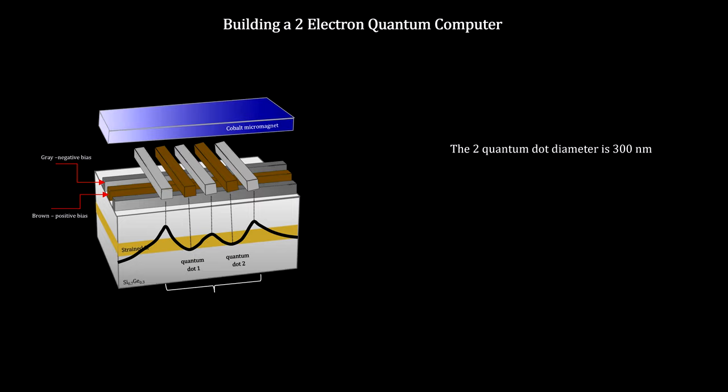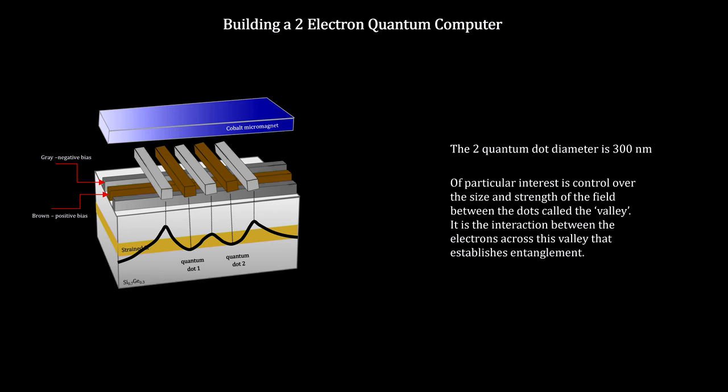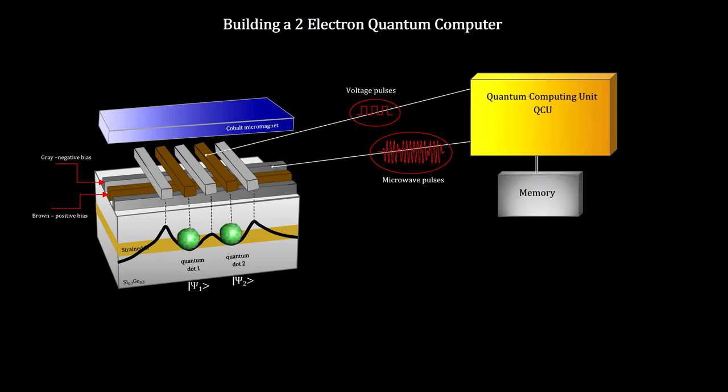On top of these two components, we add a micro-magnet to create a tapered magnetic field. This field couples electron spins to the electric field set up by the gates. With this configuration, we can introduce two electrons. The states of these electrons are controlled by microwave and voltage pulses applied to the gates by the quantum computing unit.